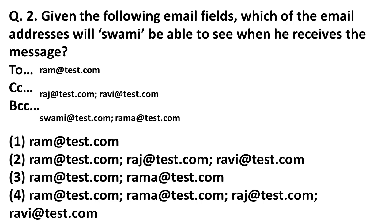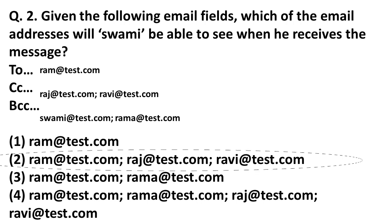The next question: given the following email fields, which email addresses will Somi be able to see when he receives the message? Somi is mentioned in the BCC category. BCC recipients can see the 'To' and 'CC' fields, but BCC is not visible to 'To' or 'CC' recipients. So Somi will be able to see Ram, Raj, and Ravi.